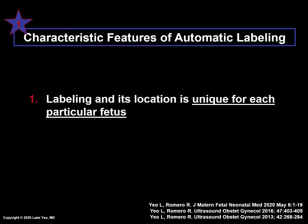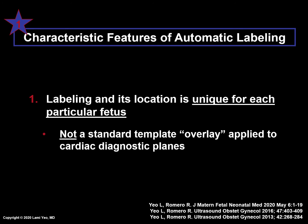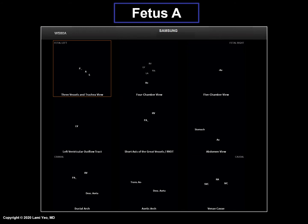The first characteristic feature is that labeling and its location is unique for each particular fetus. It is noteworthy that automatic labeling is not a standard template overlay applied to cardiac diagnostic planes. For example, this is fetus A, in which we have removed the diagnostic planes on purpose — please note the labeling of the anatomical structures. As we show fetus B, notice that the labeling of anatomical structures is completely different and is unique for this particular fetus.